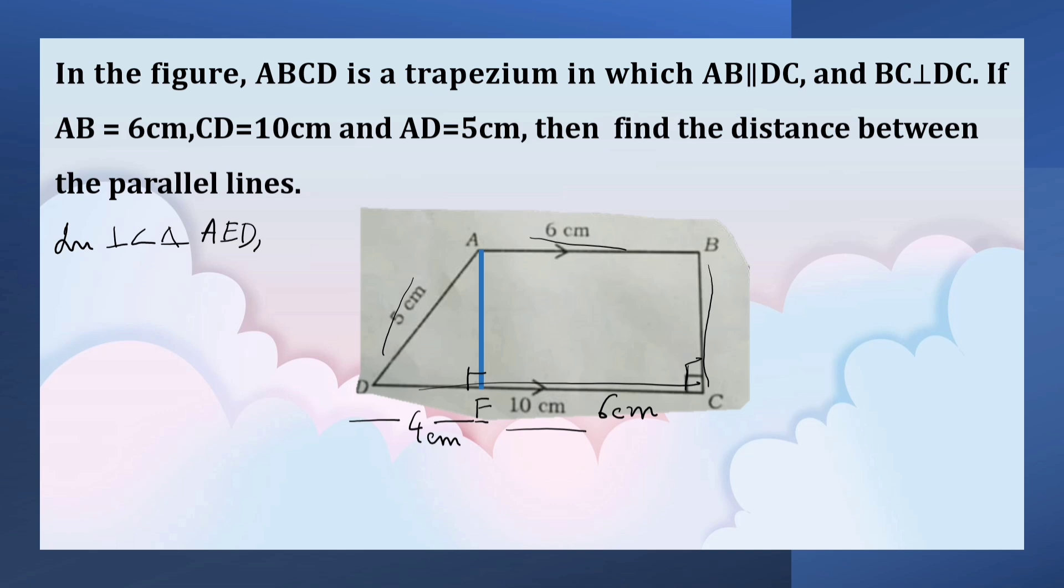AD is the hypotenuse. AD squared is equal to AE squared plus DE squared.